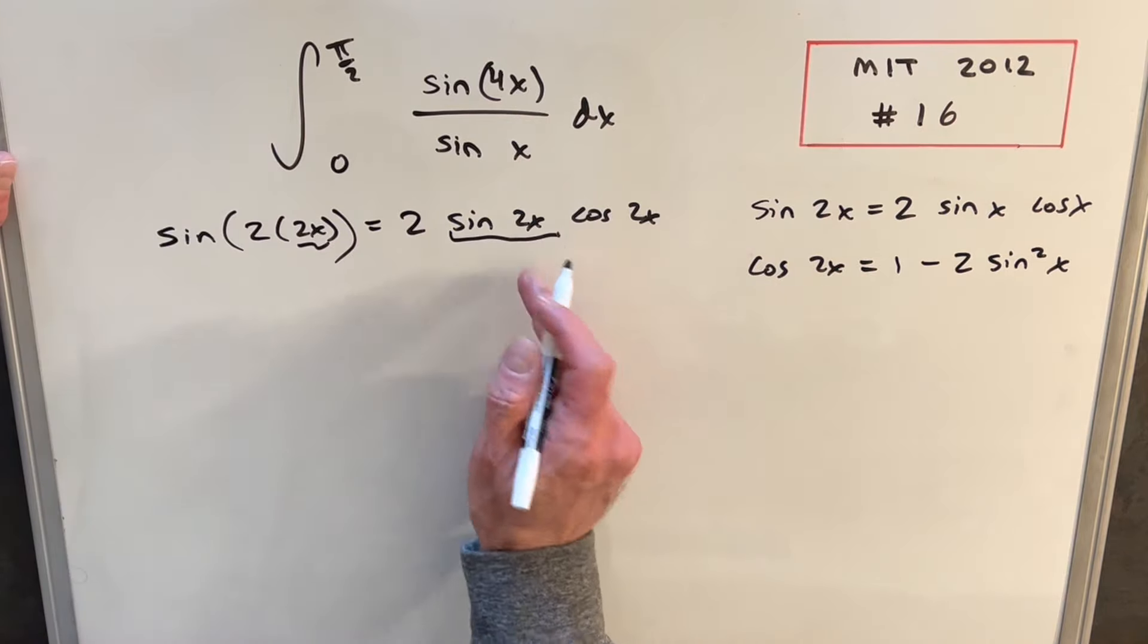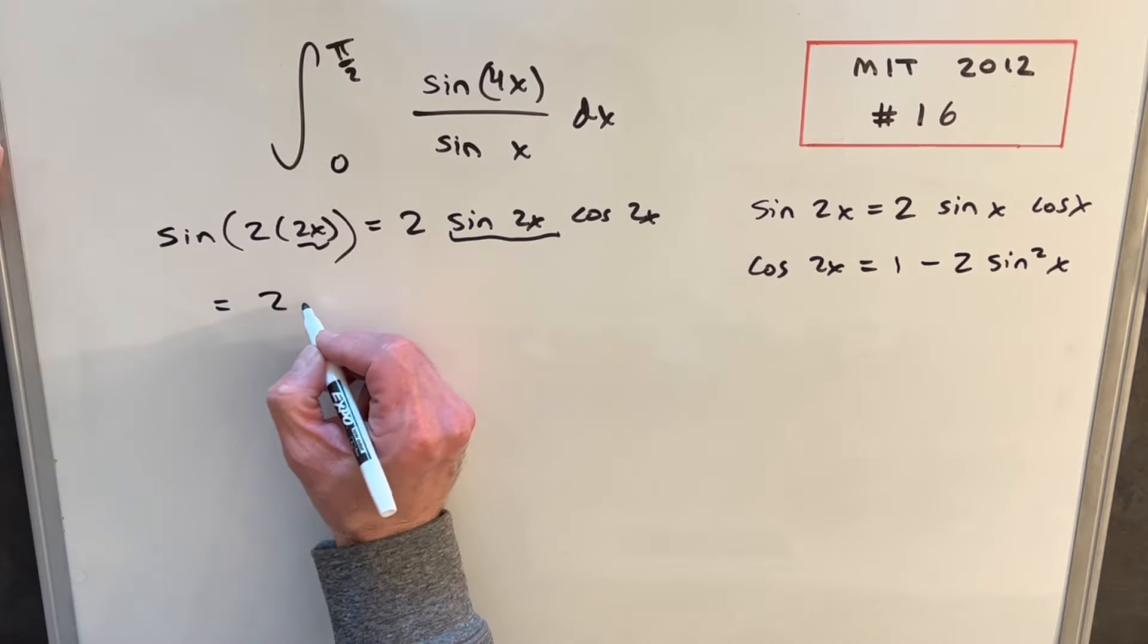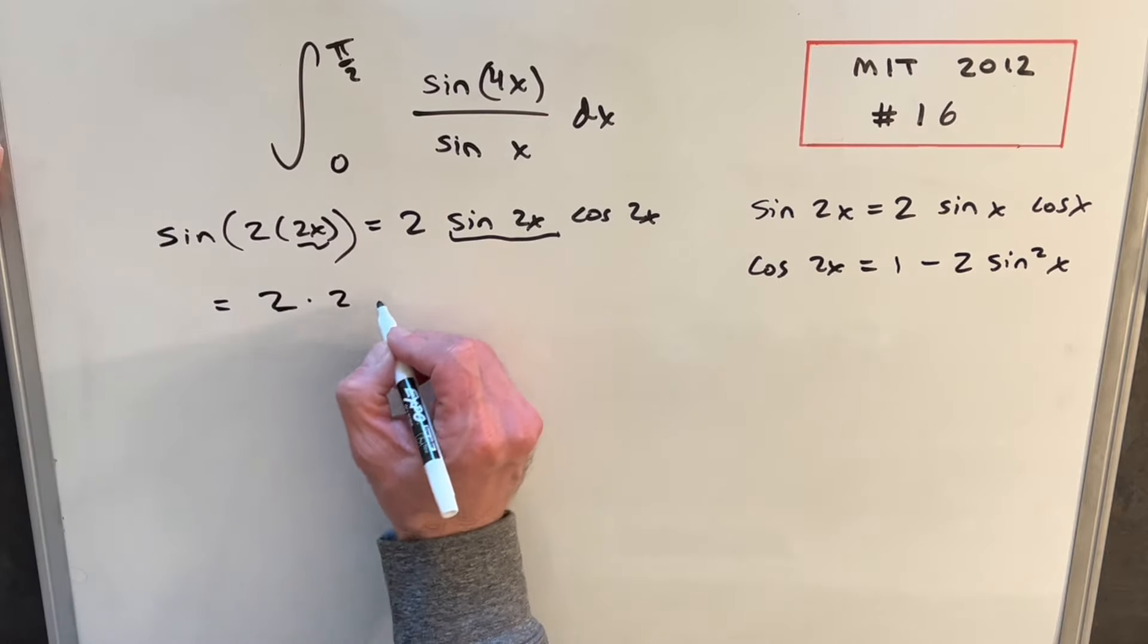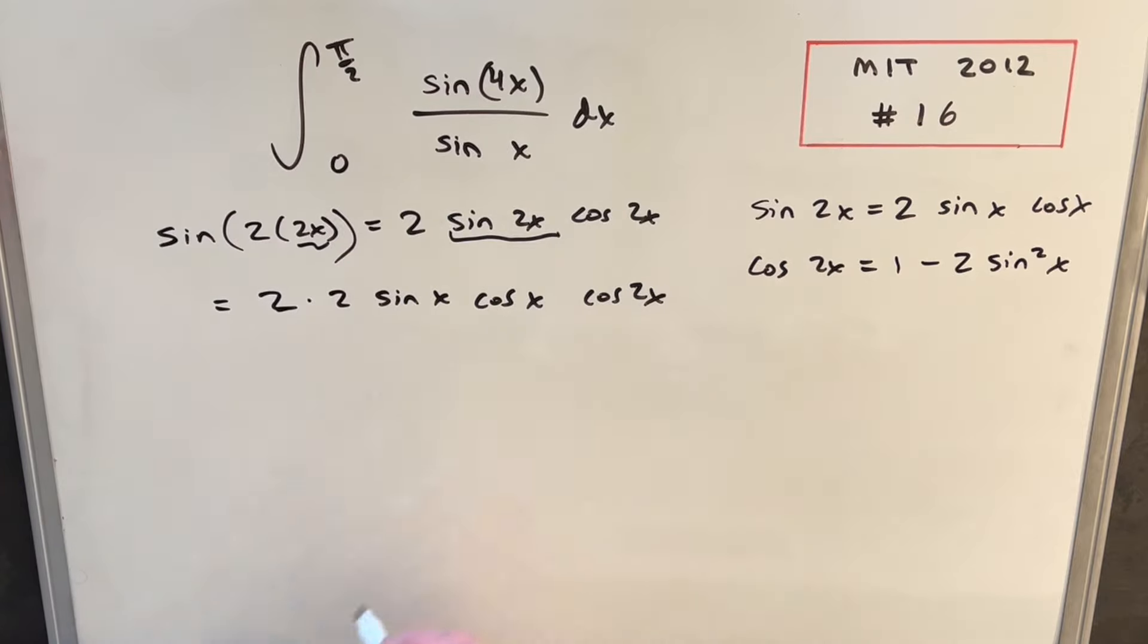But then we have the double angle, we have sine of 2x again, and we can just use this placing this with our formula. We're going to have 2 times 2 sine x cos x cos 2x.